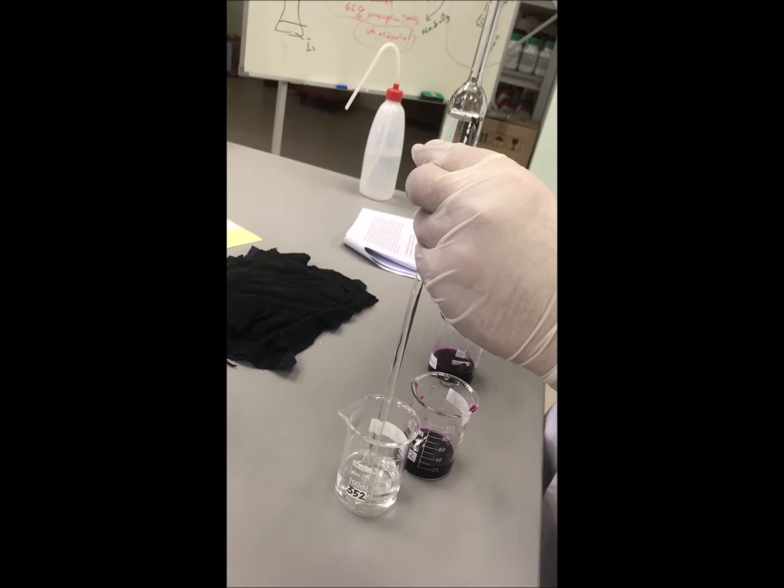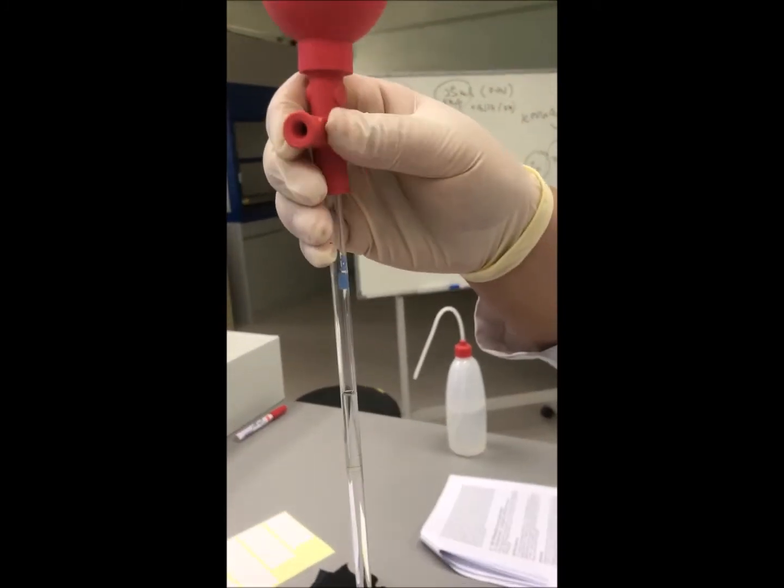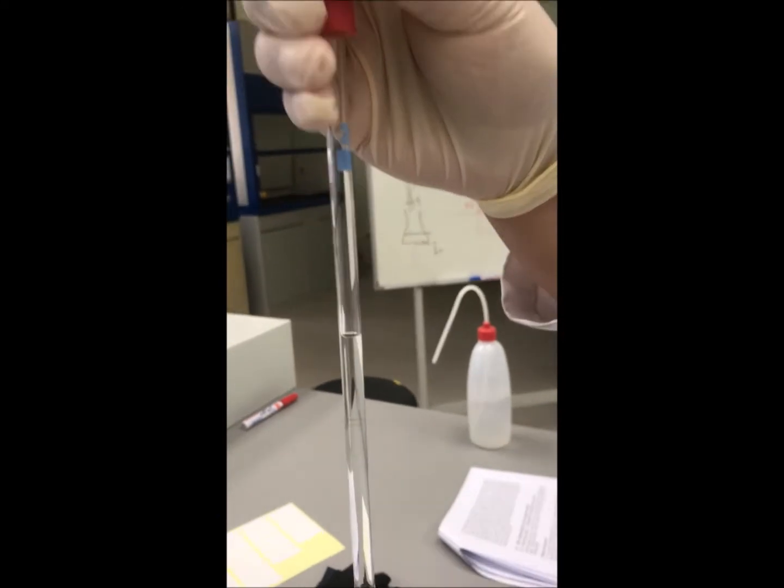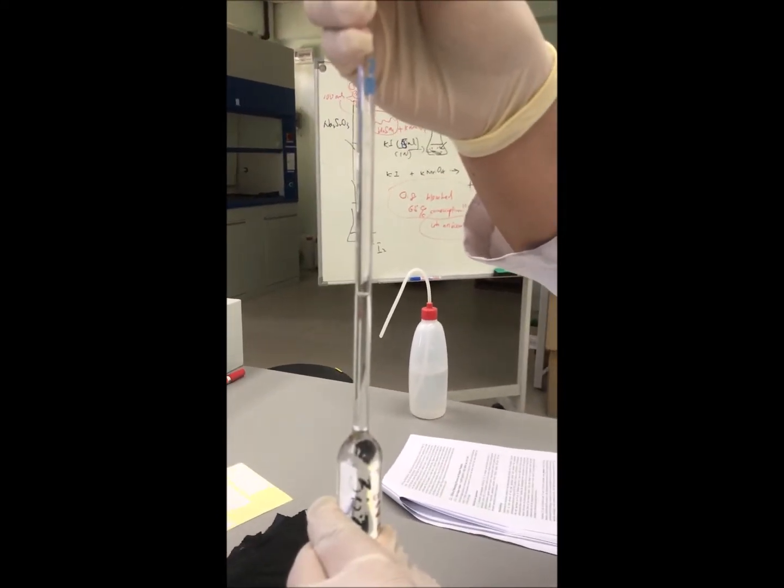Make sure the position of the pipette is straight. Then, suck the solution over the marker and release it until the bottom of the meniscus is touching the marker.